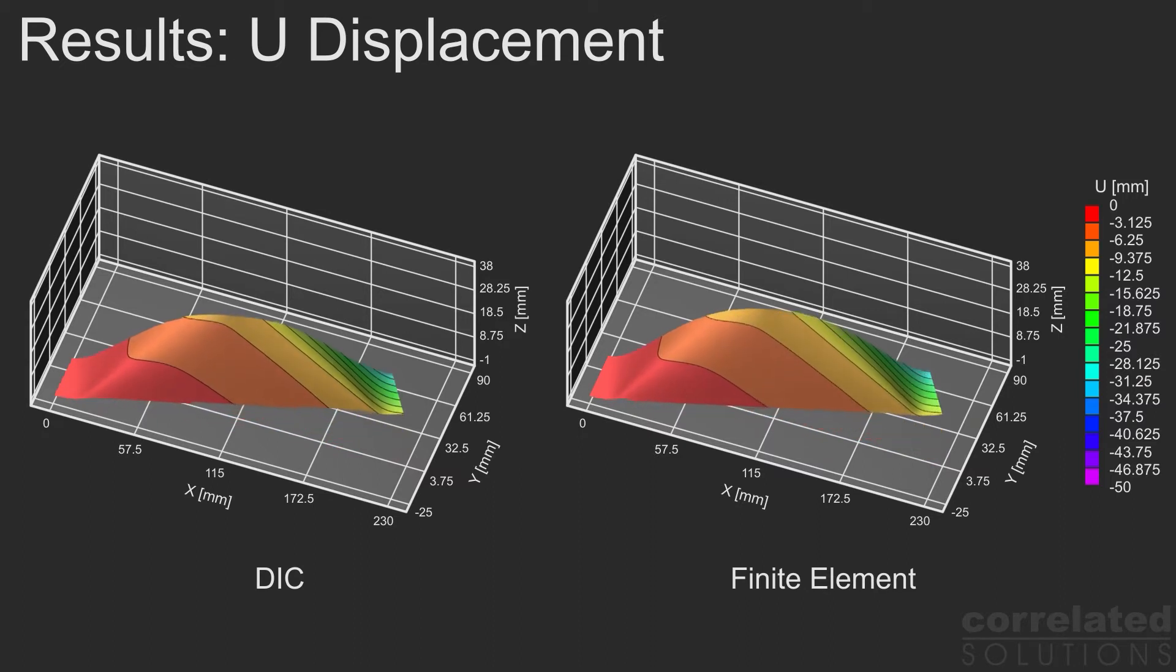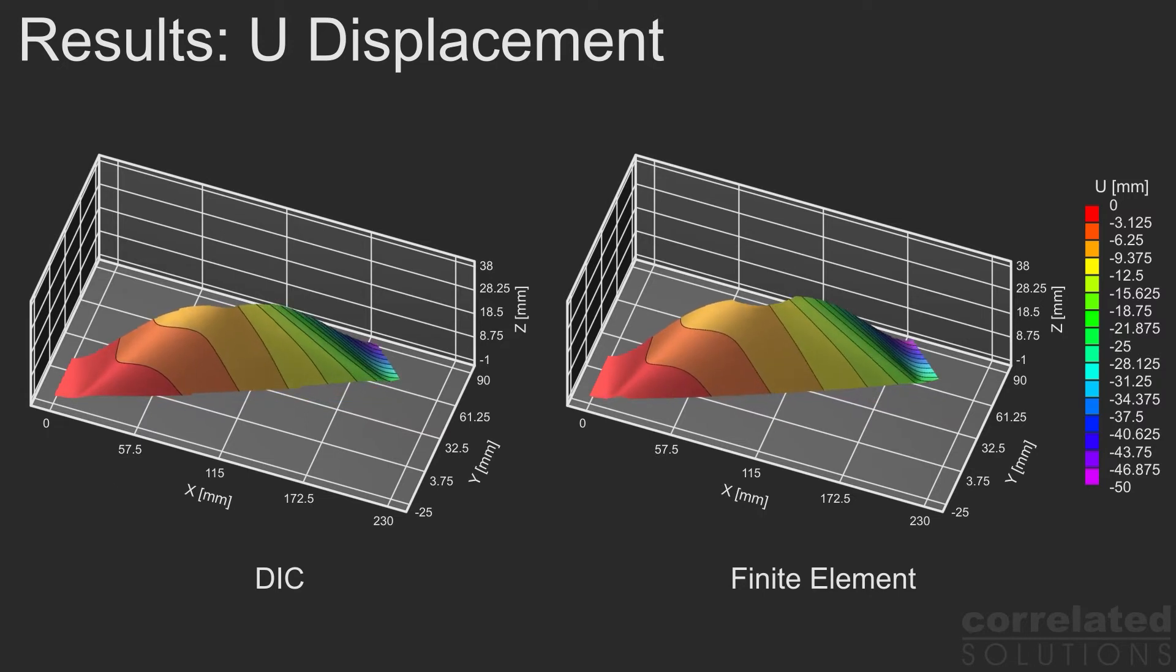The range for the U displacement, which is along the fiber direction of the toe, is from minus 50 to 0 millimeters. As you can see, the two plots look virtually identical throughout the range of curvatures applied to the specimen.